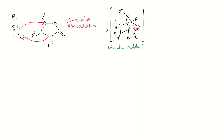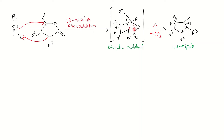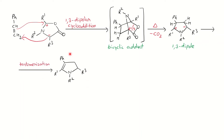On heating, loss of carbon dioxide occurs. This loss of CO2 gives a more stable five-membered ring. A bond gives its electrons generating a positive charge, another site gains a negative charge, giving a 1,3-dipole structure. Followed by hydrogen migration and tautomerization, you get the final product — a five-membered heterocycle possessing nitrogen as the hetero atom.